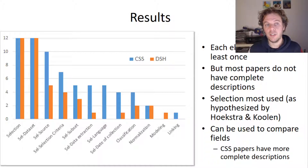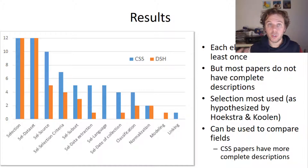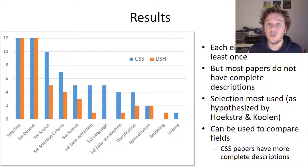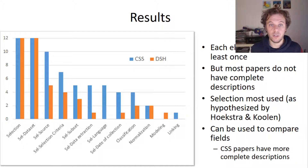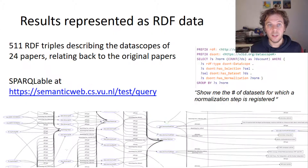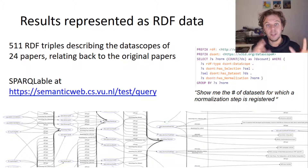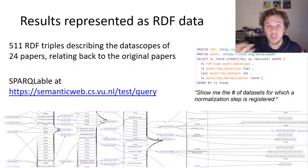One interesting thing is that we can use this to compare different fields or different journals. We see that computational social science uses the elements to a higher extent compared to the digital humanities journal. We also took these codings and turned them into data using this ontology.